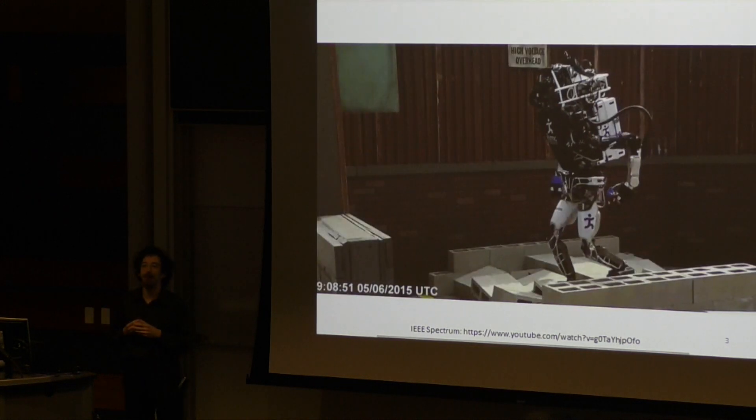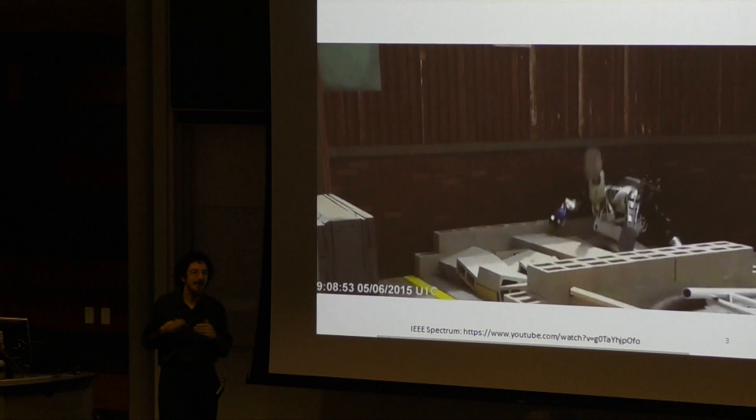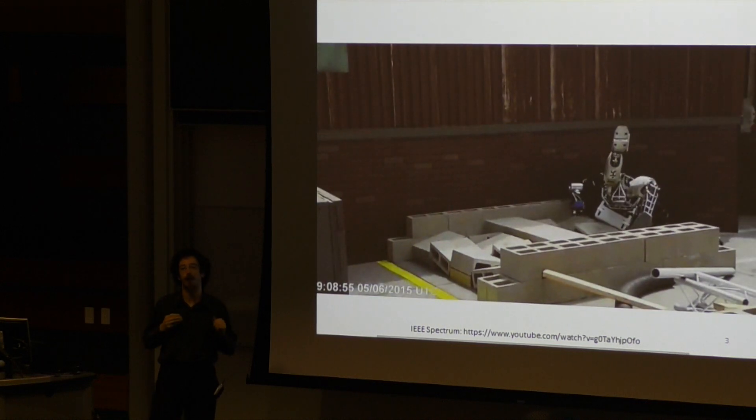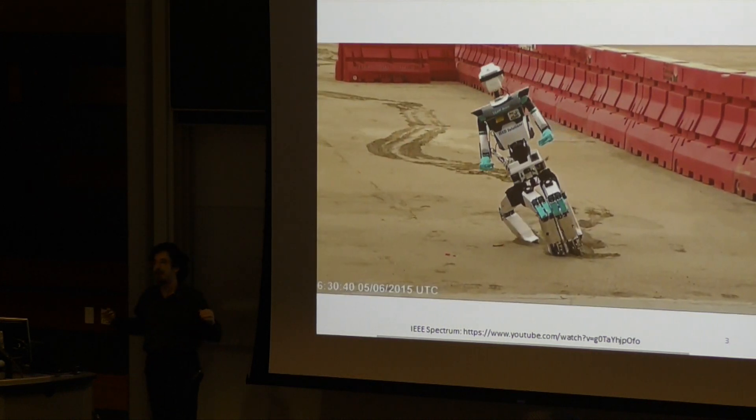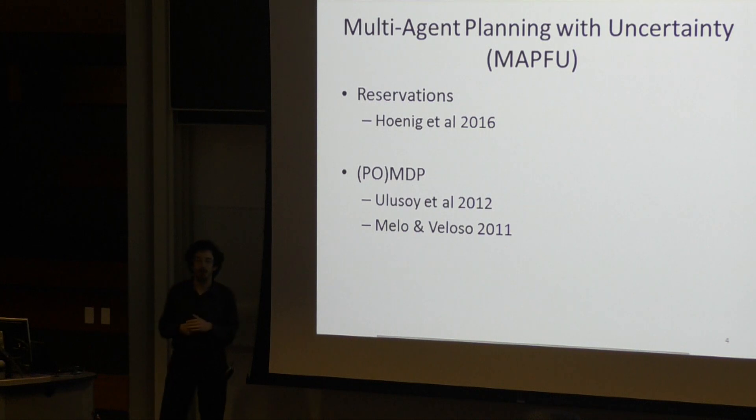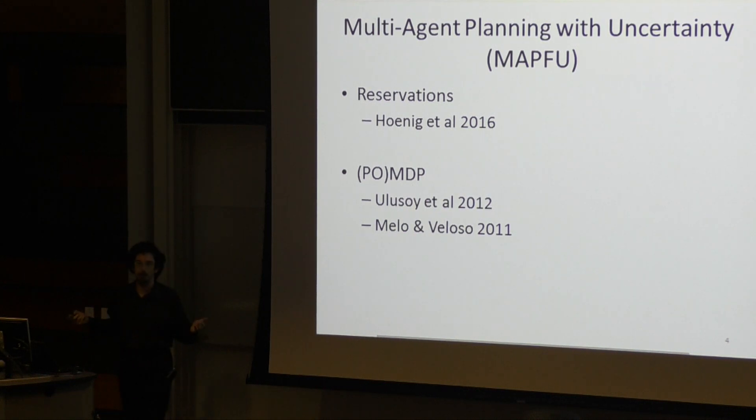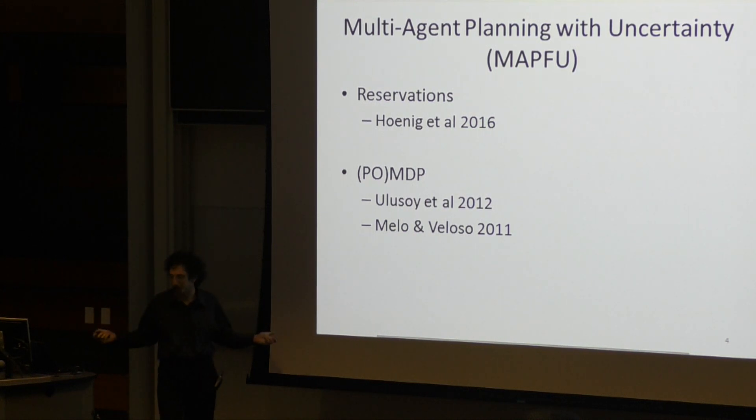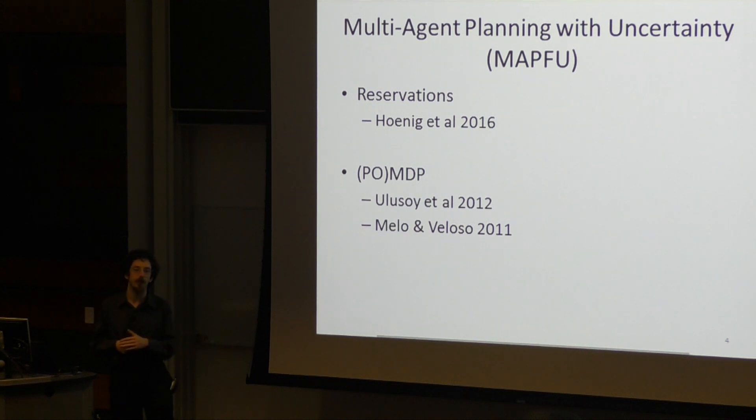Because of the inevitable mishaps that will cause any really refined plan to fail, there has been some interest in multi-agent pathfinding with uncertainty or MAPFU. There's a number of different ways you can do this.